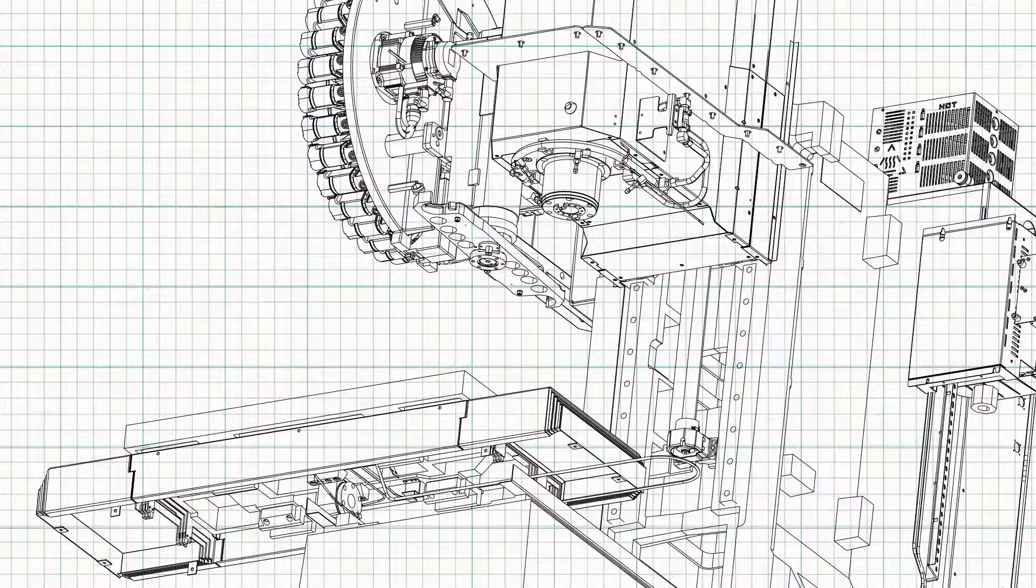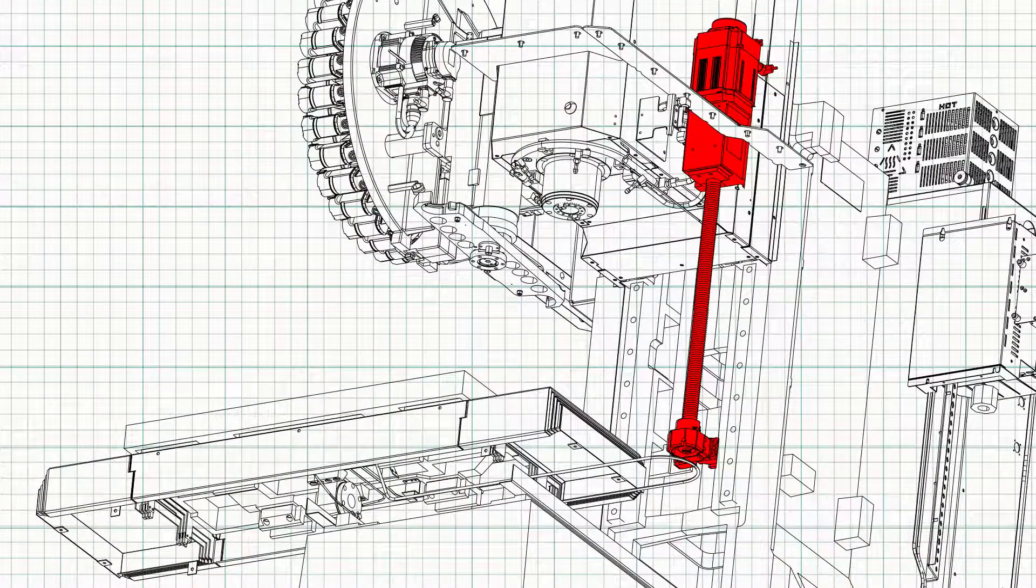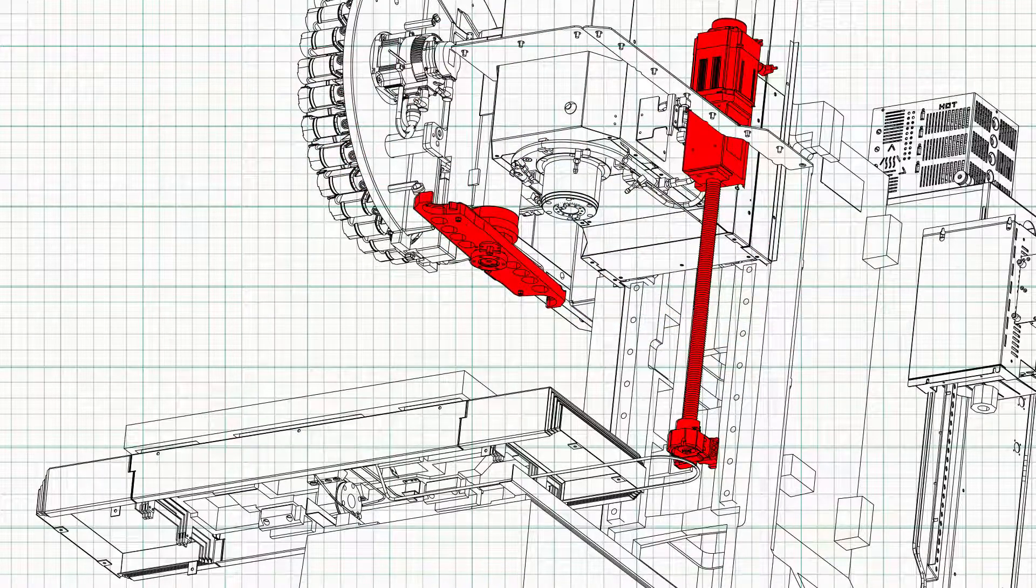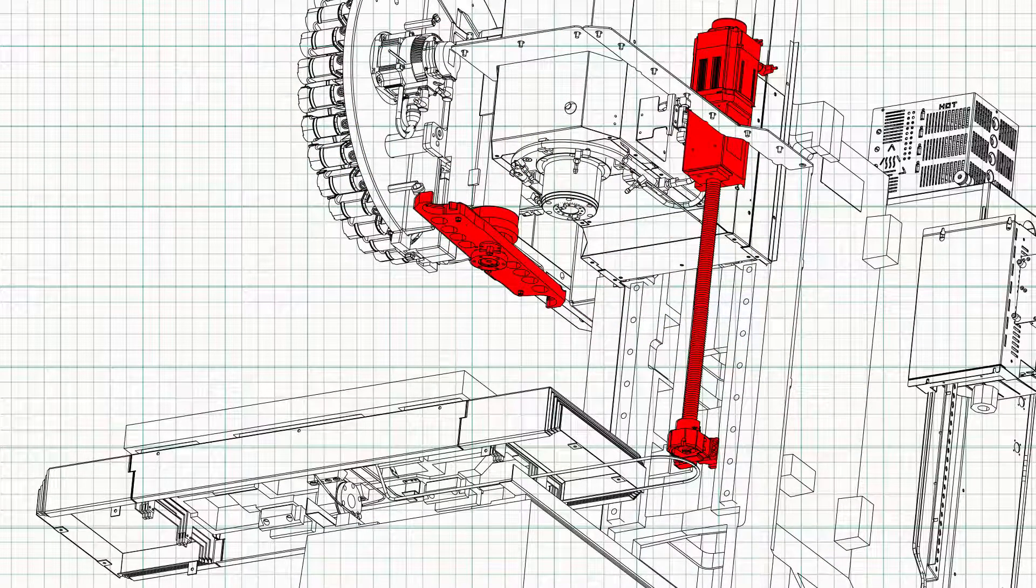If you've replaced an axis motor, a ball screw, a coupler on the Z axis, or the double arm or carousel plate on the tool changer, you'll need to check the tool change offset.